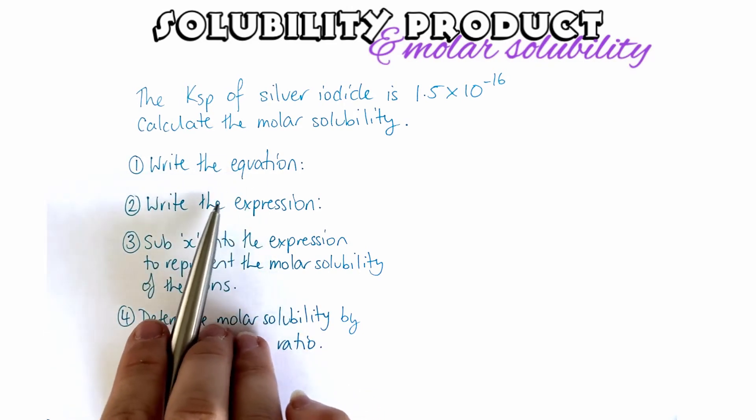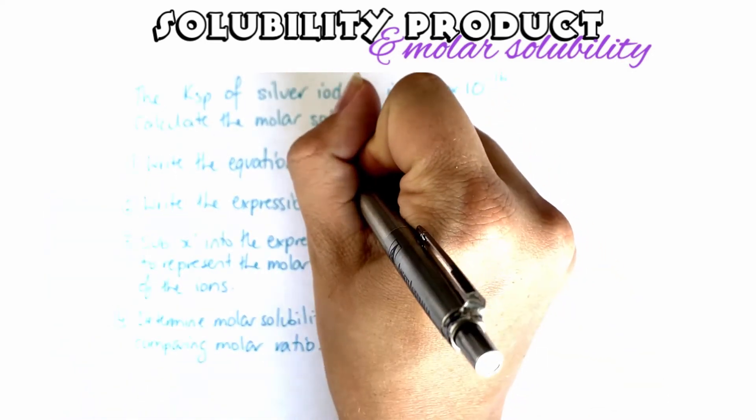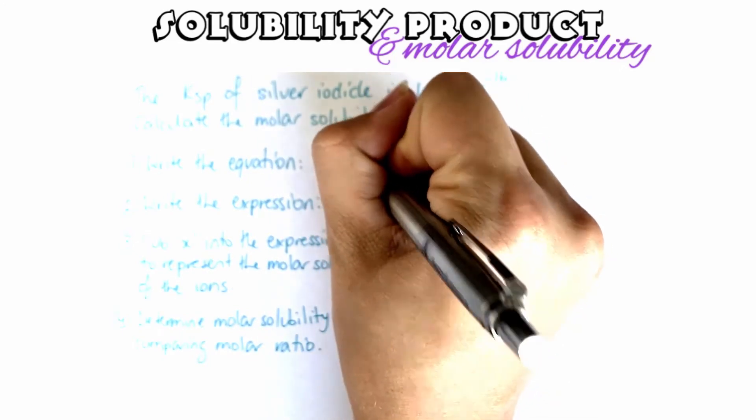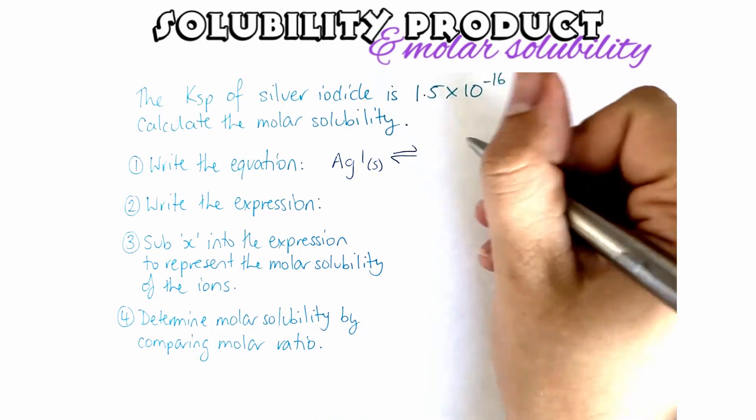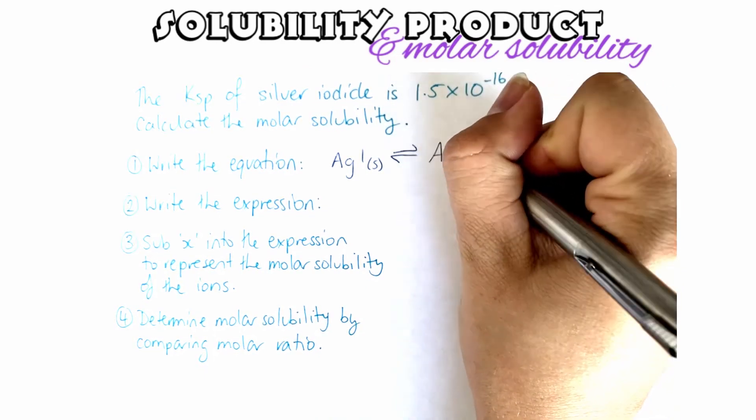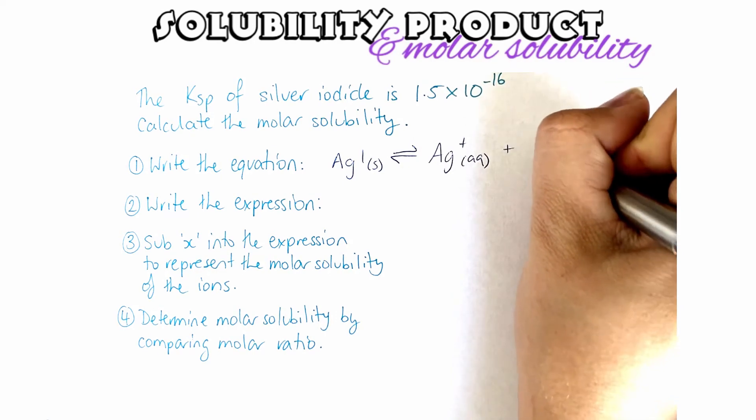So the first one, the equation for this reaction, we're looking at silver iodide. Again, we're looking at a dissociation reaction, so we're looking at it to split up into ions, so we're going to have silver ions and we're going to have iodide ions.